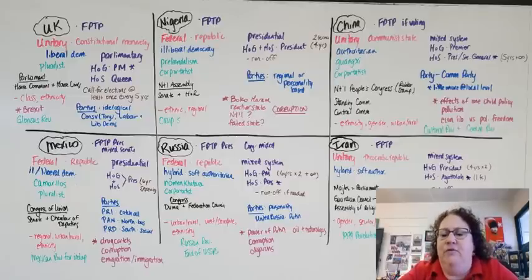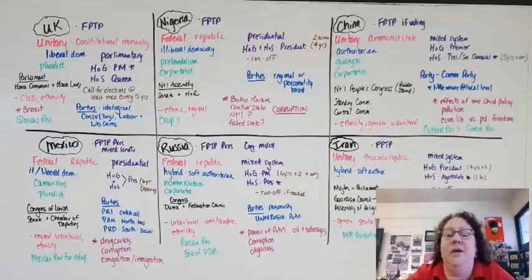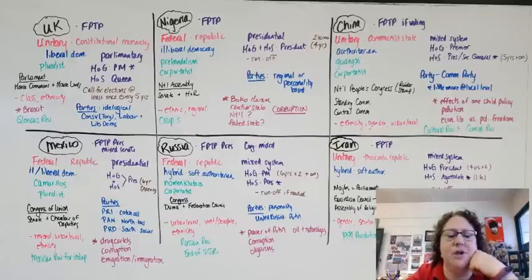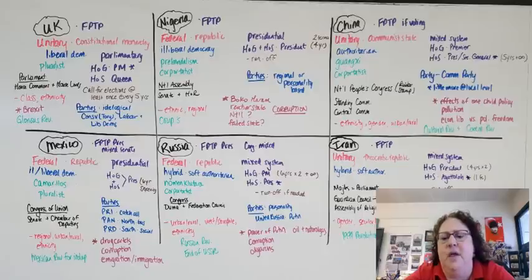Mexico is one of our three federal countries — Mexico, Russia, and Nigeria are all three. One thing I always tell my students: if you don't know what answer to pick on a question about Mexico, pick the thing most like the United States, because Mexico has so many similarities to us. Mexico and Nigeria both pretty much copied our Constitution. Nigeria so much they even kept the same names for their two legislative chambers. Mexico was greatly influenced historically by the Mexican Revolution, and the PRI — the Institutional Revolutionary Party — really controlled almost everything in Mexico until 2000, when Vicente Fox became the first non-PRI president.